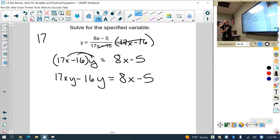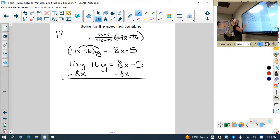And now I have an x on both sides, so I'm going to subtract 8x. I'm left with 17xy minus 8x minus 16y equals negative 5.